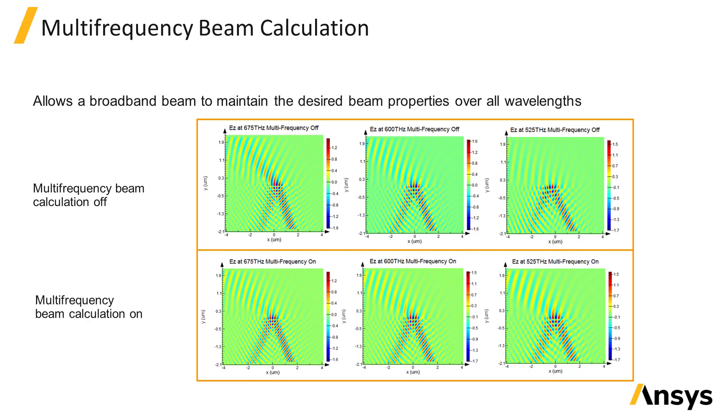For example, the images here show a beam incident from the bottom right of the plot on a surface, and the angle of the beam propagation varies with frequency when the multi-frequency beam calculation option is not selected.